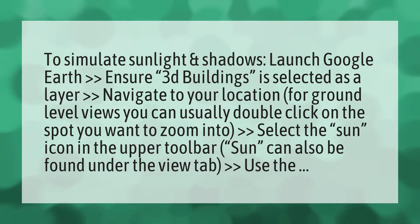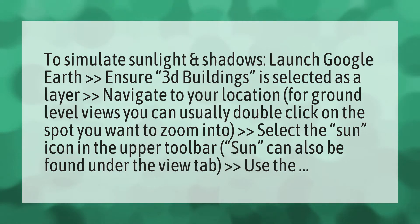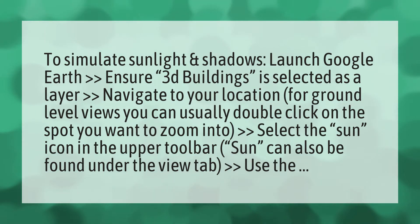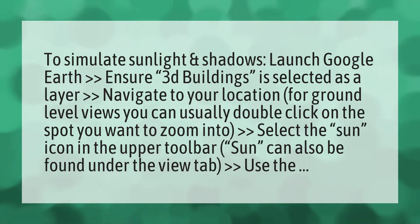To simulate sunlight and shadows, launch Google Earth, ensure 3D buildings is selected as a layer, and navigate to your location. For ground-level views, you can usually double-click on the spot you want to zoom into, then select the sun icon in the upper toolbar.